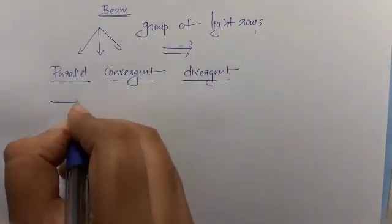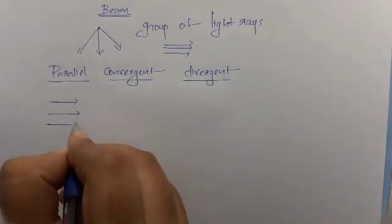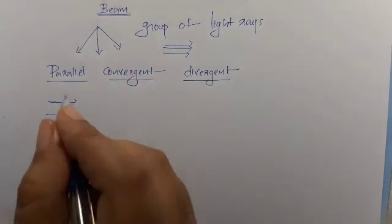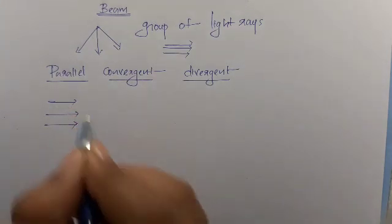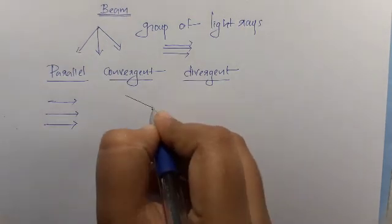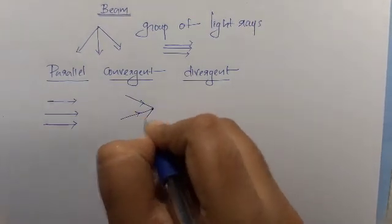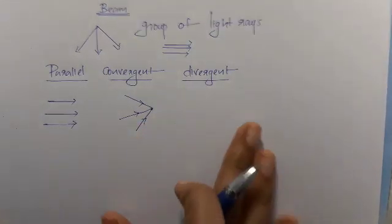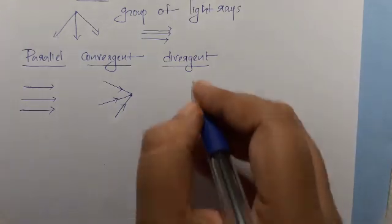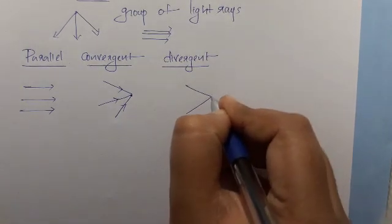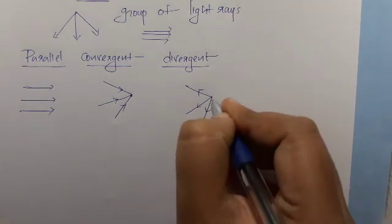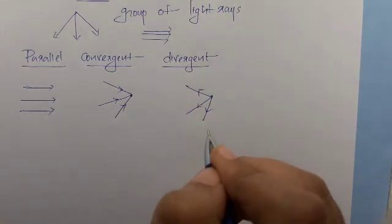In a parallel beam, the rays travel parallel to each other. In a convergent beam, the light rays meet at one point. In a divergent beam, the light rays spread out from a point. So the three types are parallel beams, convergent beams, and divergent beams.